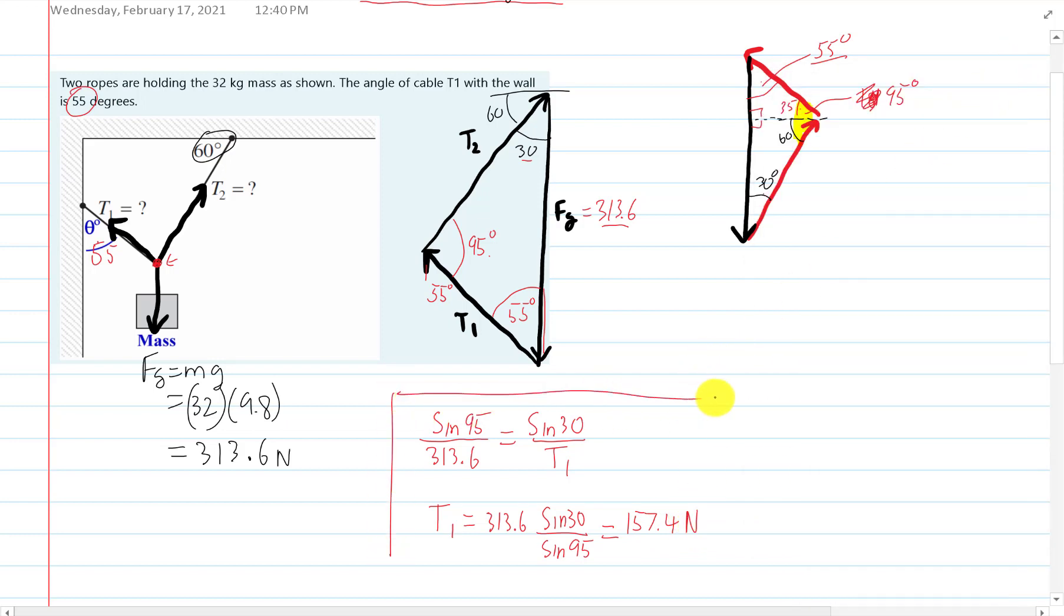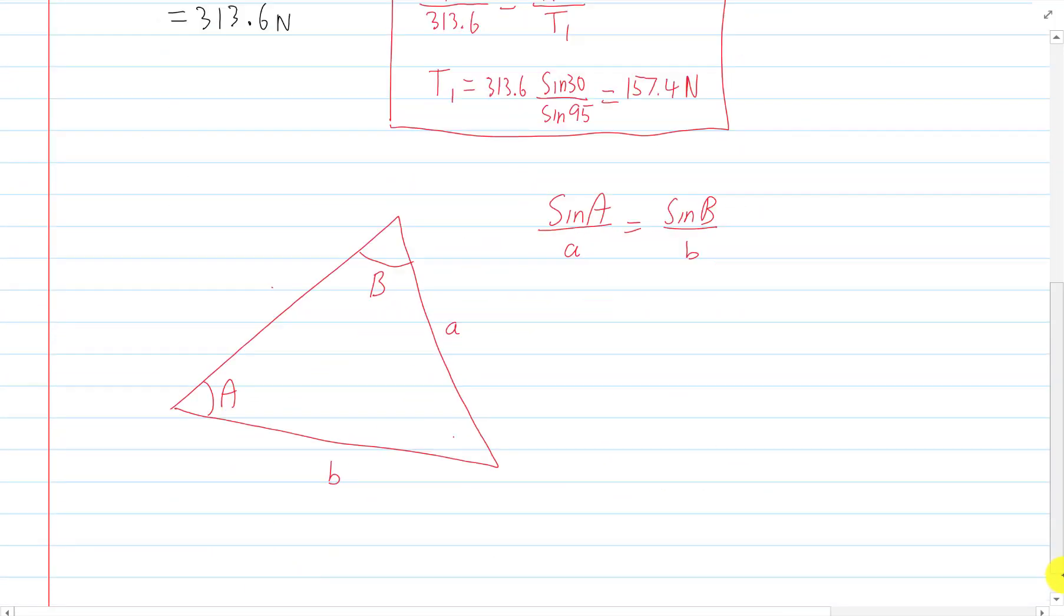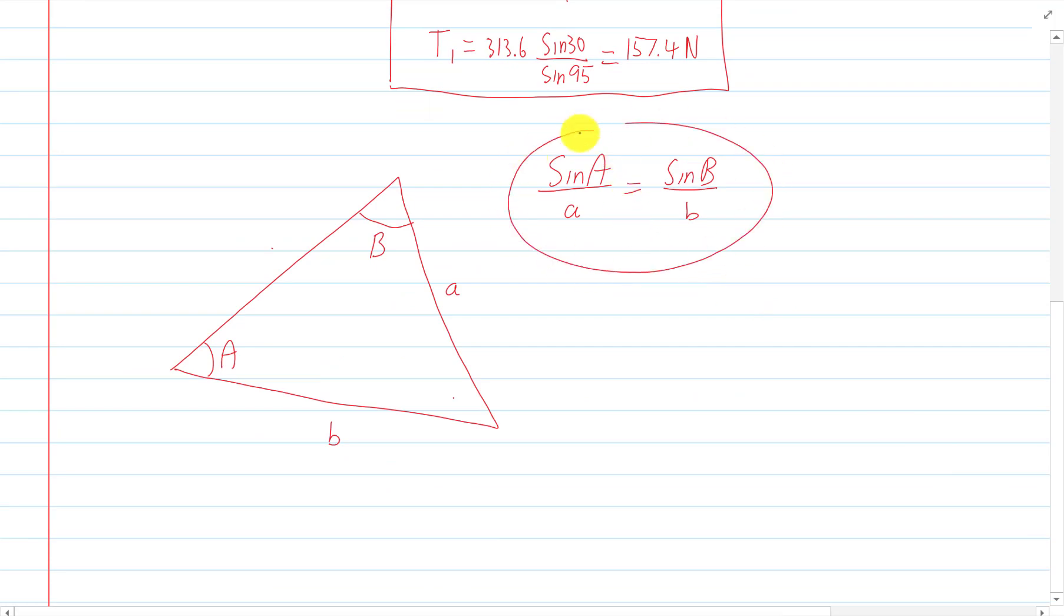That's how to solve for T1. And how to solve for T2 is the next sine law. And see, if you follow here, if I say this I can also say a over sine a equals b over sine b. I could flip both sides and it works.